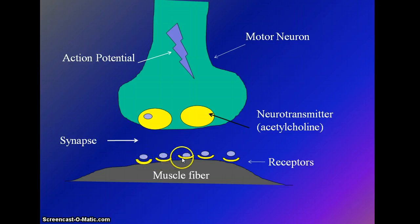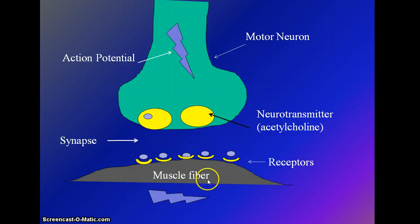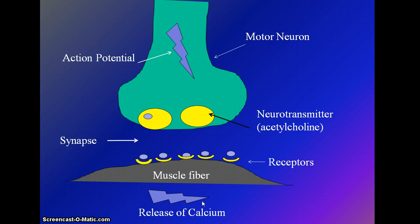If enough of these acetylcholine neurotransmitters bind to receptors, it will then induce an action potential in the muscle fiber, and that will induce the muscle fiber to release calcium from the sarcoplasmic reticulum.